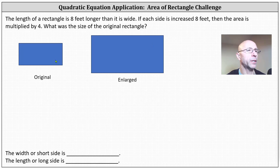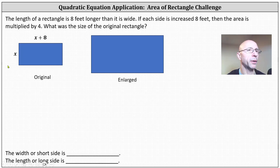Using the left rectangle as the original rectangle, because the length is eight feet wider than its width, we can label the shorter length x and the longer length x plus eight. Each of the sides are increased by eight feet, so after the rectangle is enlarged, the shorter length is x plus eight and the longer side is x plus eight plus eight, or x plus 16.